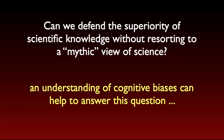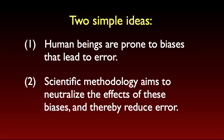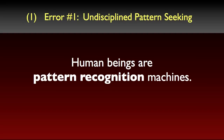It can help us think about why science is important and why scientific methods are what they are. It can be summarized in two points. One: human beings are prone to biases that lead to error. Two: scientific methodology aims to neutralize the effects of these biases and thereby reduce error. Let's look at these two points in order. First, human beings are prone to biases that lead to error. What sorts of biases? I'm thinking of two kinds of biases in particular. The first is related to the fact that we're pattern recognition machines. Human beings see patterns everywhere.